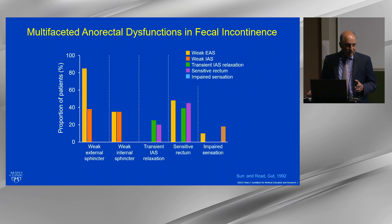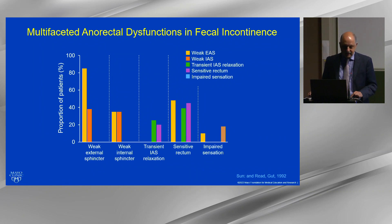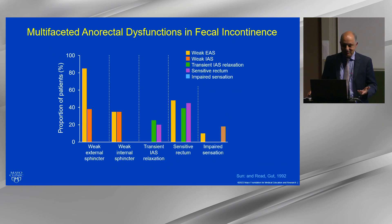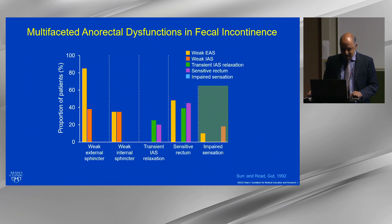Fecal incontinence is characterized by multifaceted anorectal dysfunctions. The seminal study by Nick Reed and Sun, over 300 patients, showed that the most common disturbance was weakness of the external anal sphincter in over 80% of patients. Roughly half also had weakness of the internal anal sphincter. All patients who had weakness of the internal sphincter also had weakness of the external sphincter — not surprising because the external sphincter is affected first in obstetric trauma. Approximately 20% have reduced rectal sensation, whereas approximately 45% have increased rectal sensation.